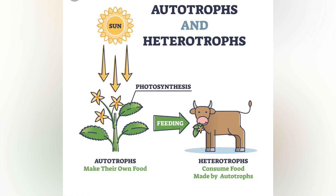A heterotroph is an organism that cannot produce its own food, instead taking nutrition from other sources of organic carbon — mainly plant or animal matter. In the food chain, heterotrophs are primary, secondary, and tertiary consumers, but not producers. Living organisms that are heterotrophic include all animals and fungi, some bacteria, and many parasitic plants.